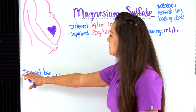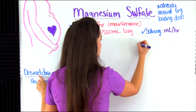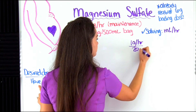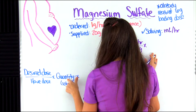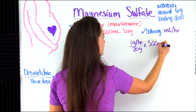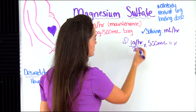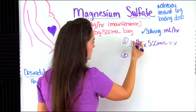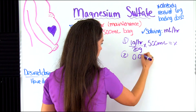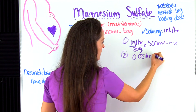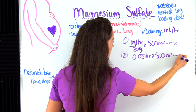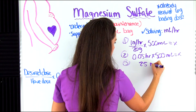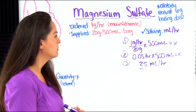Using our formula, we put the desired dose — one gram per hour — over what we have, which is 20 grams, then multiply by the quantity: 500 milliliters. That equals X. Take a quick look — do the units match? They do, so we're good to solve. We divide one divided by 20, which gives us 0.05. The grams cancel out, leaving hours. Multiply by 500 and we get 25 milliliters per hour. That is our answer — that is what we will set our infusion rate at.